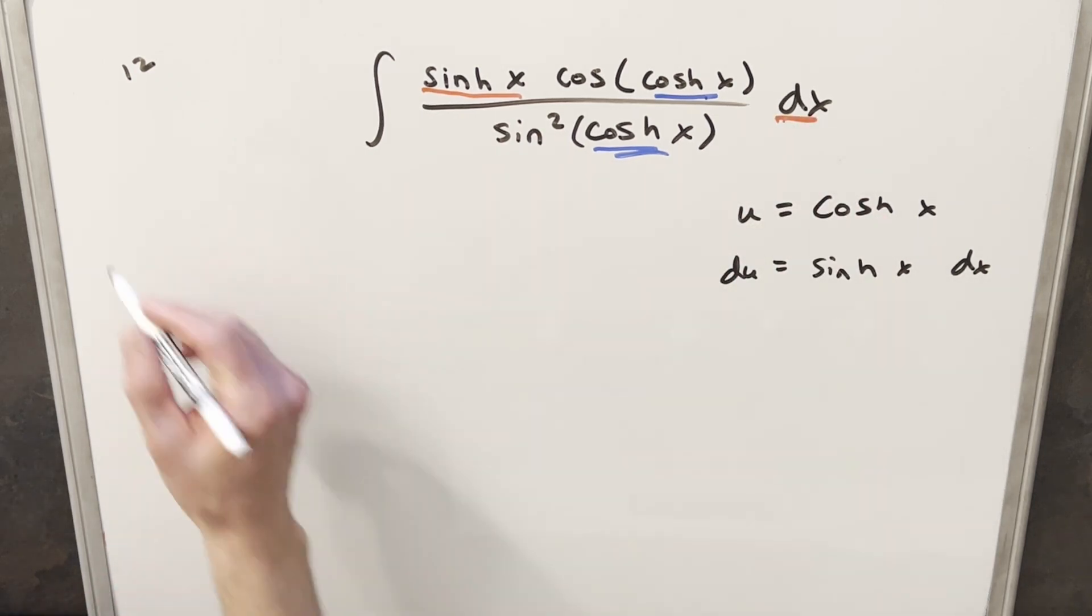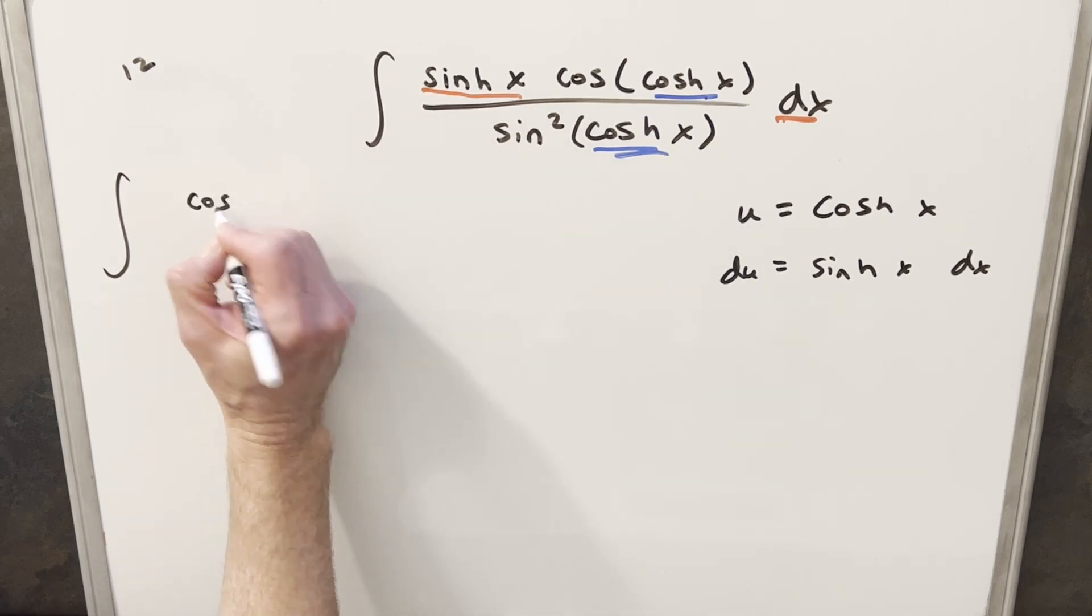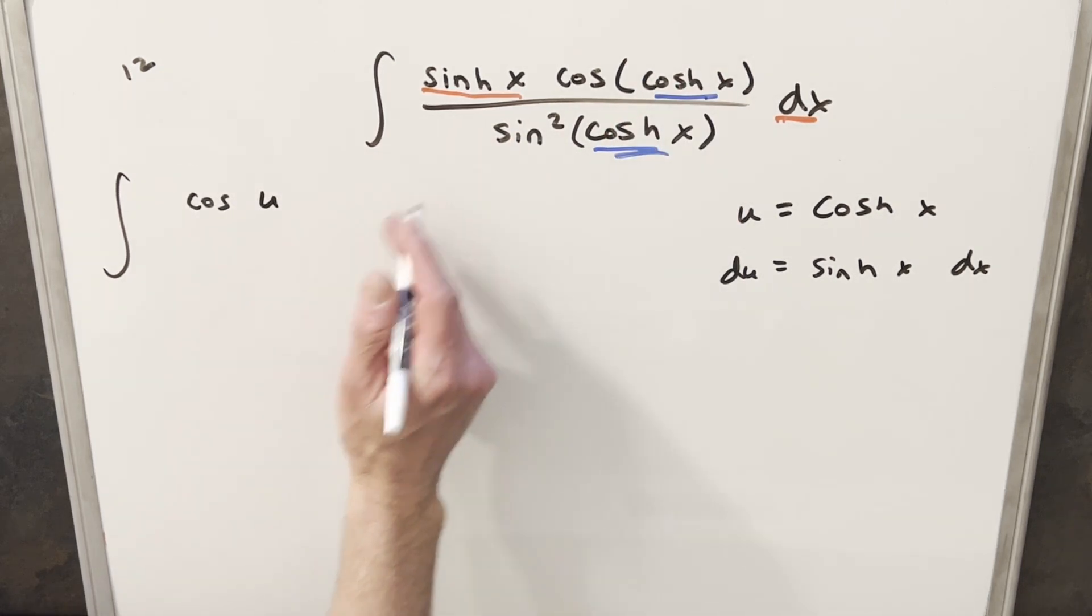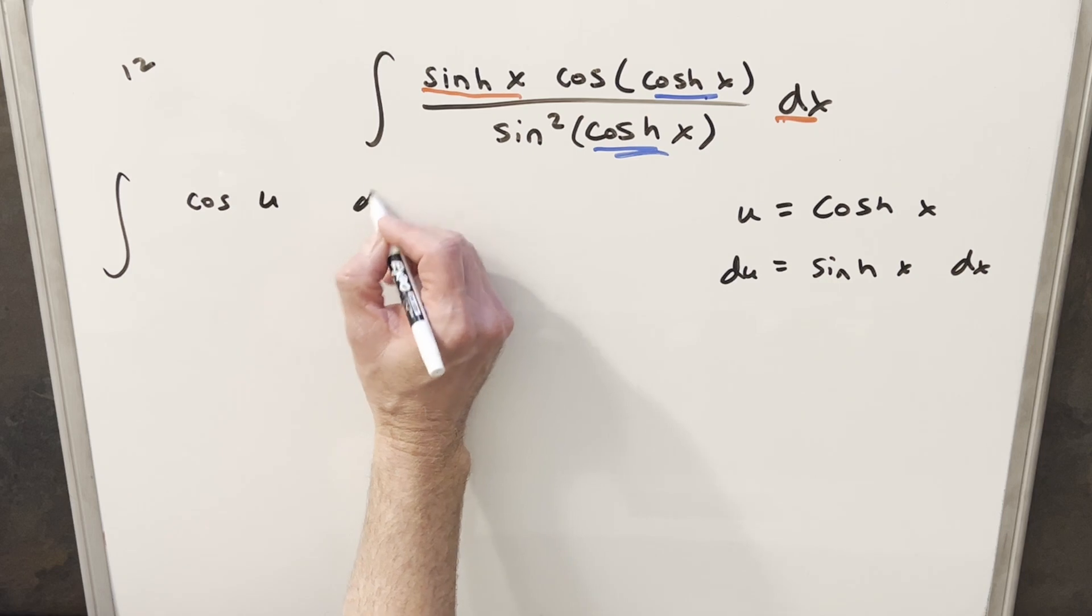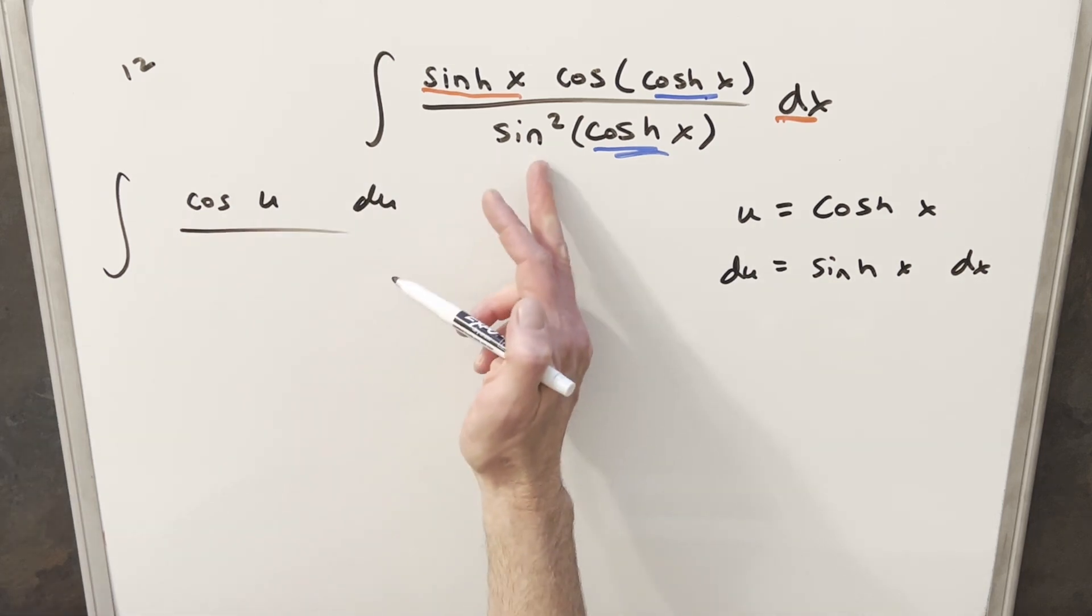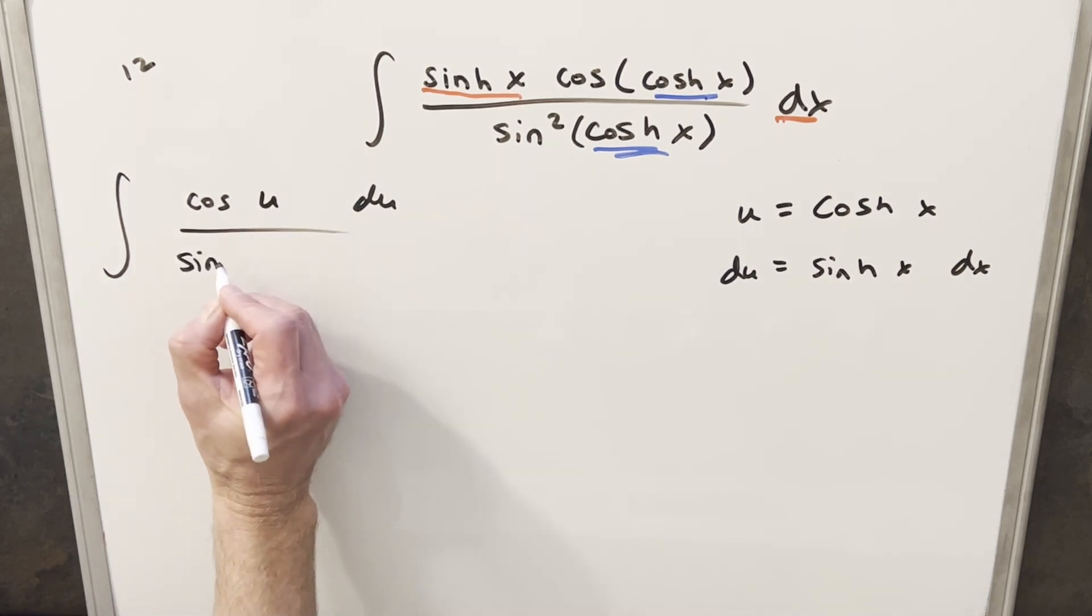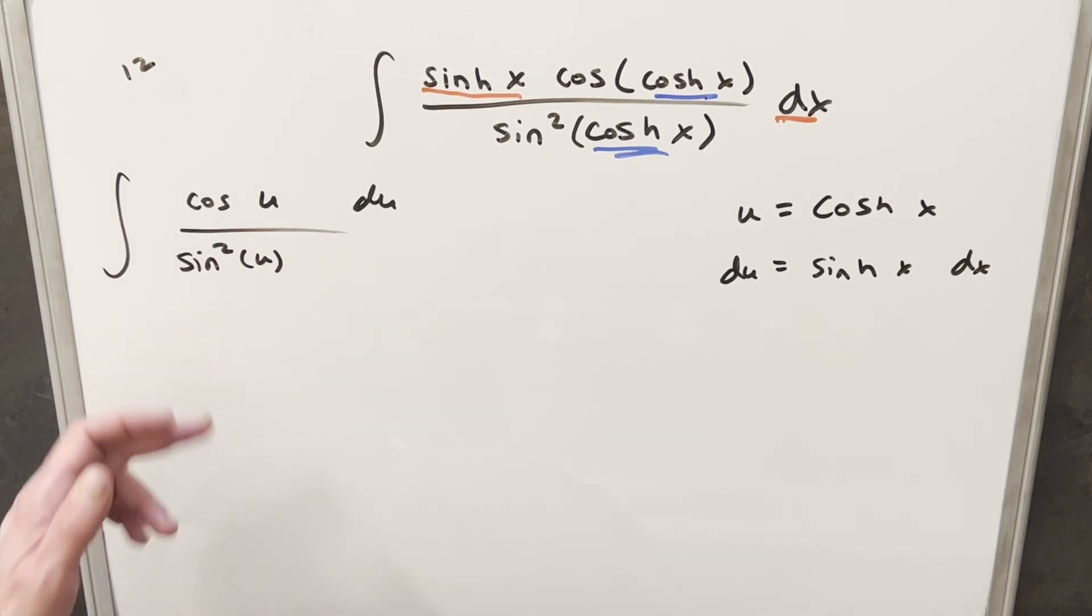So we'll just go ahead with this. First of all, in the numerator we're going to have cosine. This is going to be just u. Then this and this is going to give me my du here. And then the denominator, this is just going to become sin²(u).